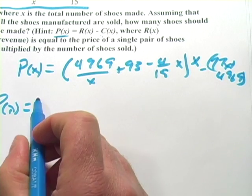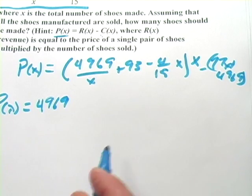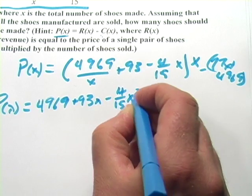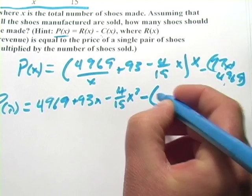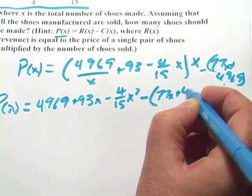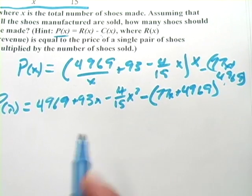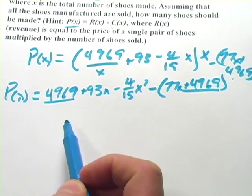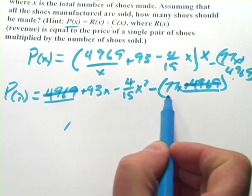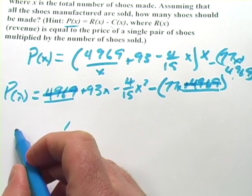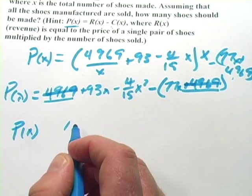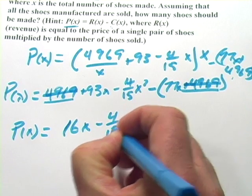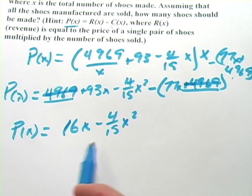So the profit function is the price function times x. Let's go ahead and multiply that x through. Doing that we get 4969 plus 93x minus 4 fifteenths x squared and then minus the cost function minus 77x plus 4969. Now we can simplify a little bit. If I multiply this negative sign through, this becomes negative and we have the same value out here. So these two will actually cancel each other out. And then we have a negative 77x and a positive 93x. So this actually becomes quite a bit simpler. We can write this as what is that 16x? So 16x minus 4 fifteenths x squared. So there's our profit function simplified down.